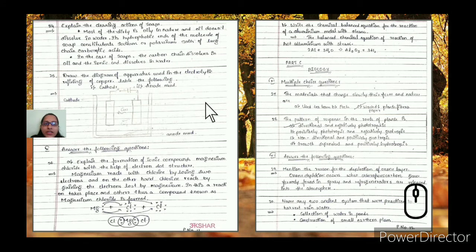Draw the diagram of apparatus used in the electrolytic refining of copper and label cathode and anode mud. In electrolytic refining of copper, you use copper sulphate solution. The impure metal is at the anode. When you pass electricity through the solution, pure metal attaches to the cathode. The remaining waste material gets deposited at the bottom and is known as anode mud.